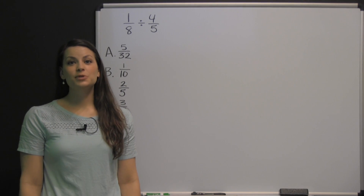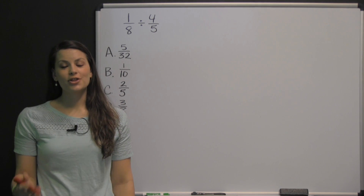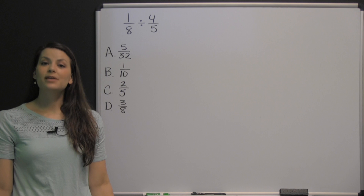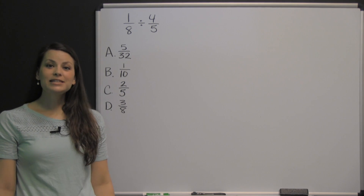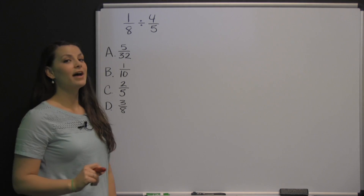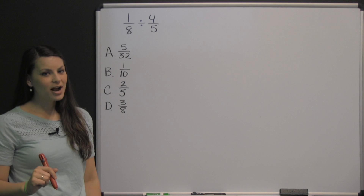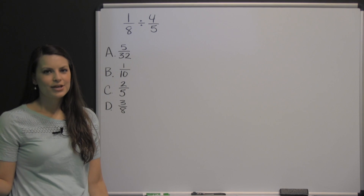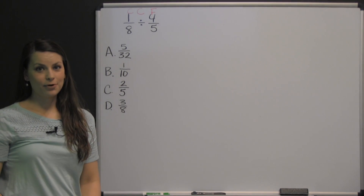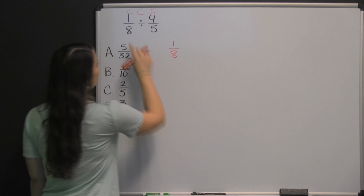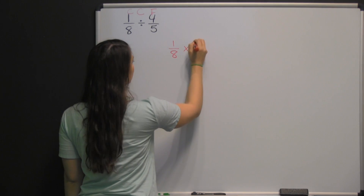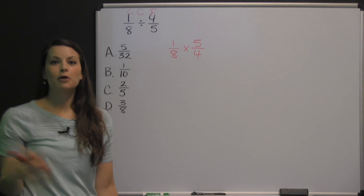The TABE exam is split into two different math sections. On the mathematics computation portion, you will not be given a calculator, so be prepared to solve these problems using just a pencil and scratch paper. Let's dive in: one-eighth divided by four-fifths. Here's the interesting thing about fractions — you can't actually divide them. So we do what's called copy, change, flip — or multiply by the reciprocal. We copy the first fraction, change division into multiplication, and flip the last fraction.